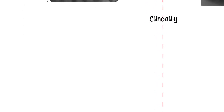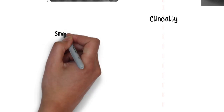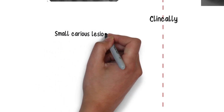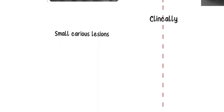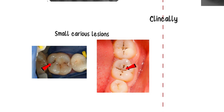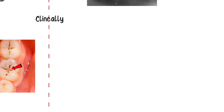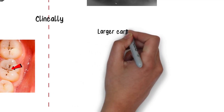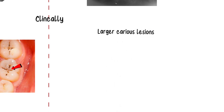Clinically, a tooth suffering from reversible pulpitis will show a small carious lesion usually in the pits and fissures of the posterior teeth, while the lesions of irreversible pulpitis are much larger and more extensive.